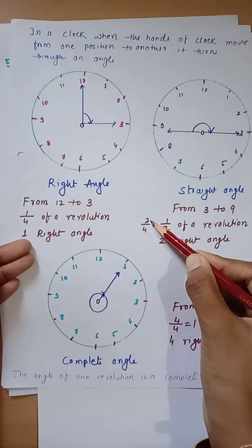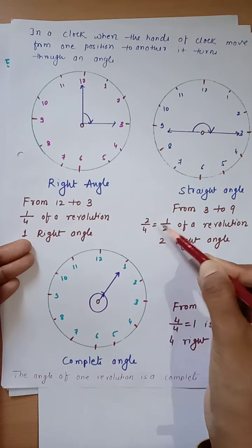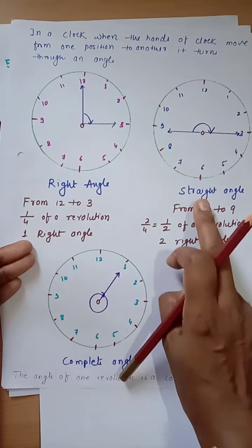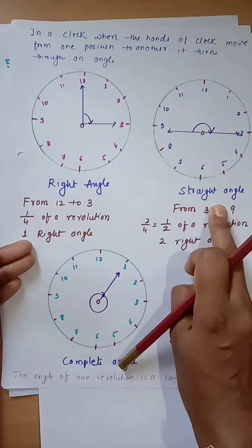So 2 cover 2 part out of 4. So 1 by 2 of the complete revolution. It has two right angle and this is called straight angle.